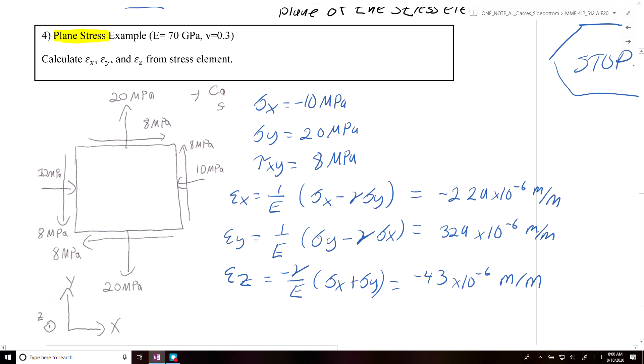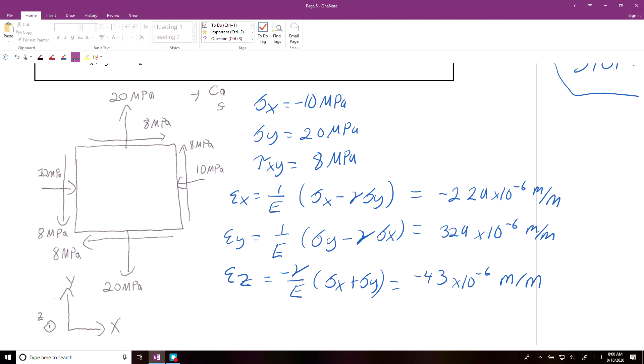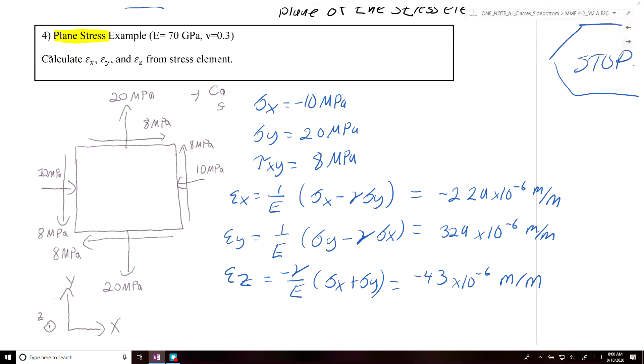And then the last case was just a plain stress example. So you just had to calculate the strains given the following stresses. So you were given the sigma x, sigma y, and tau xy. And so if you just plug these values into the three equations for epsilon x, epsilon y, and epsilon z, you should get the following numbers.